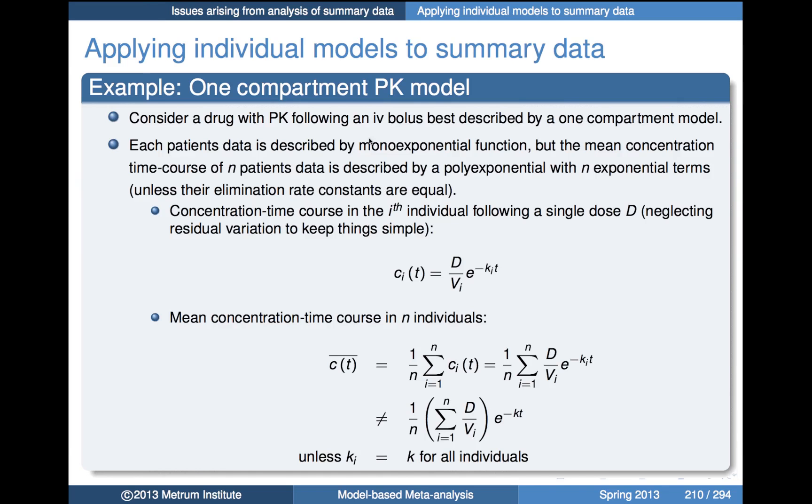Let me bring that home with a couple of simplified examples. Starting with a one-compartment model: say we have a drug where the PK following an IV bolus is best described by a one-compartment model. In that case, each individual patient's data would be described by a mono-exponential function, but the mean concentration-time course for n patients is actually described by a poly-exponential with as many as n exponential terms — unless their elimination rate constants are equal.